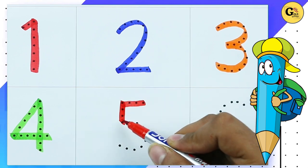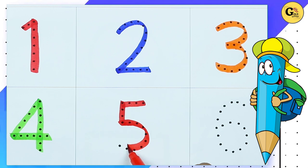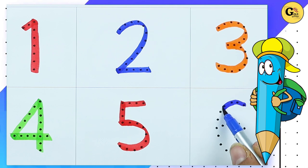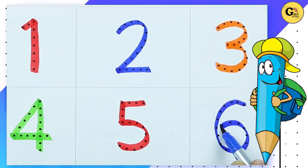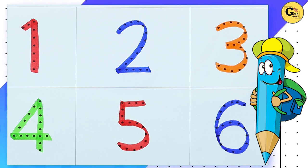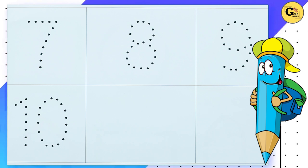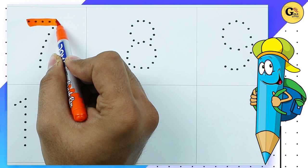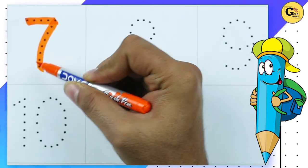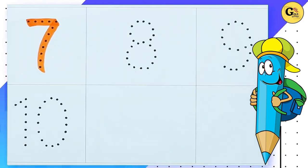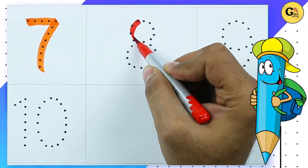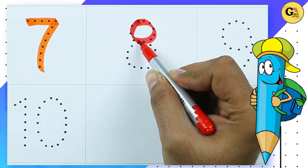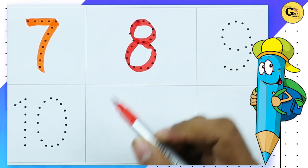It's number five with red color. It's number six with blue color. Number seven with orange color. It's number eight with red color.